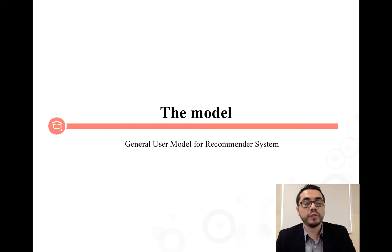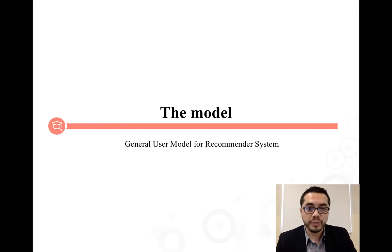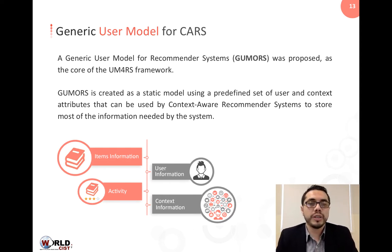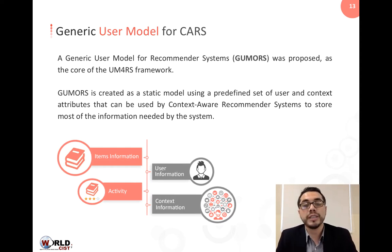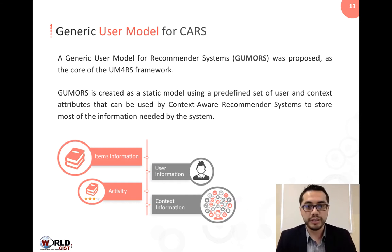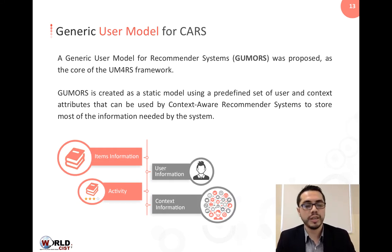The first part of our proposal is a general user model for recommender systems. The model is a set of attributes used to store most of the information that a context-aware recommender system needs. These attributes were gathered through a systematic literature review based on the Kitchenham methodology. To organize all the information, we use the following categories: User, Context, Items, and Activity Information.